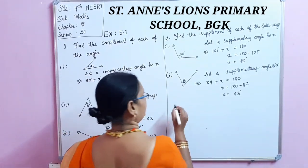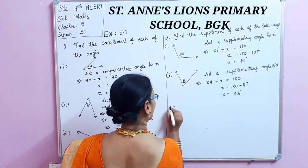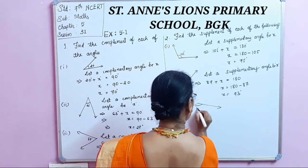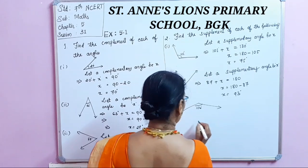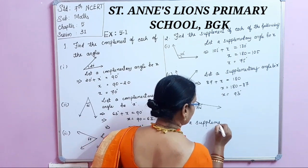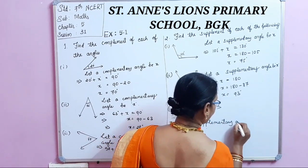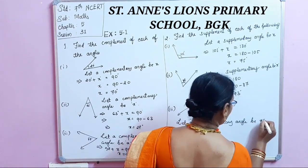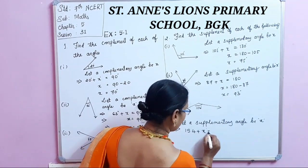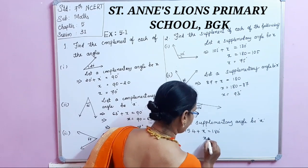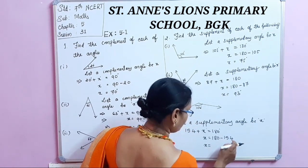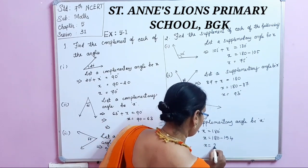The third angle is 154 degrees. Let the supplementary angle be X. Then 154 plus X equals 180 degrees. X equals 180 minus 154, so X equals 26 degrees.